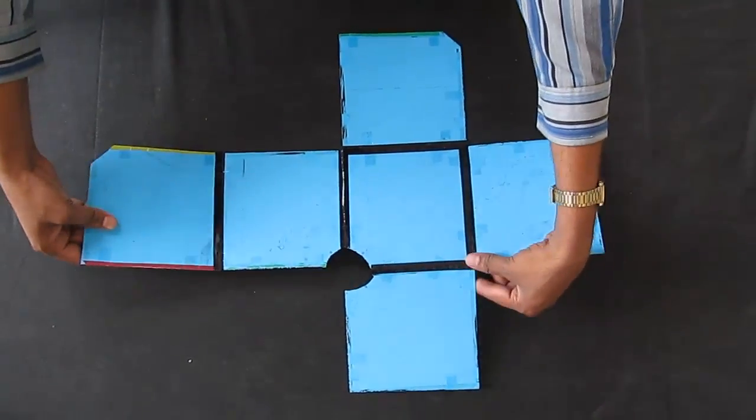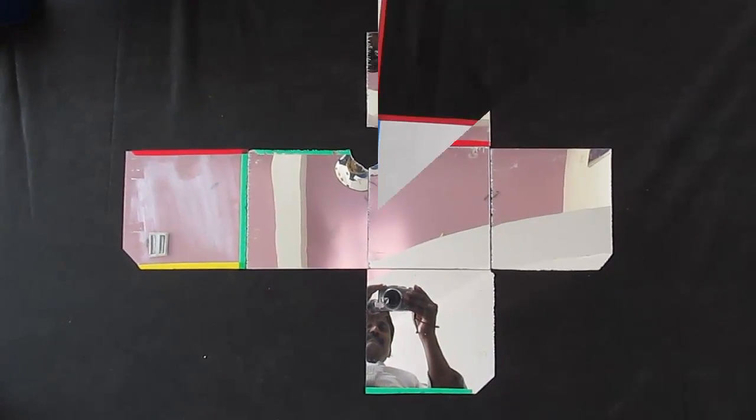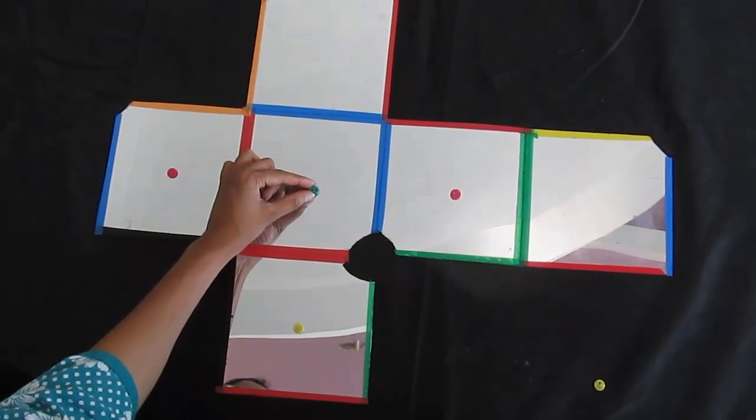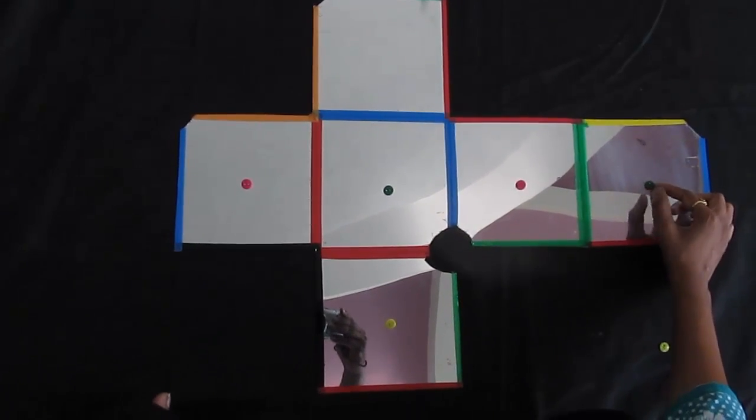With the mirrors facing downwards, tape the edges of the square. Tape the joint sides as shown. Stick the colored beads on the center of the reflecting side of each of the six squares.